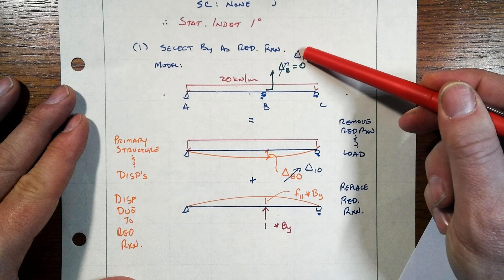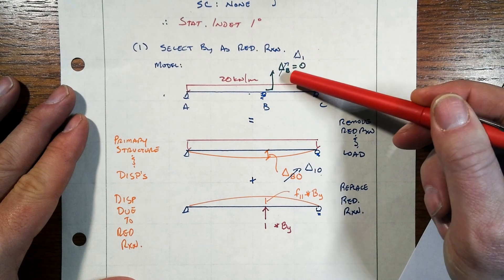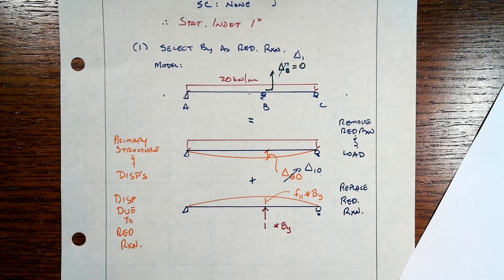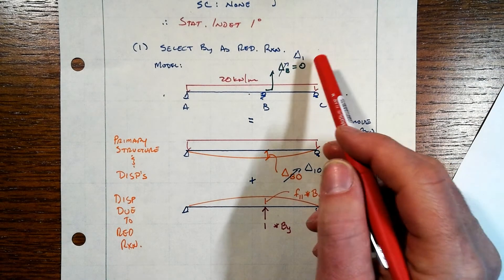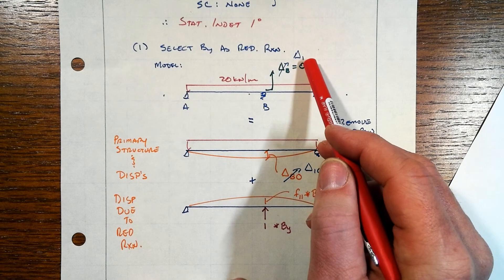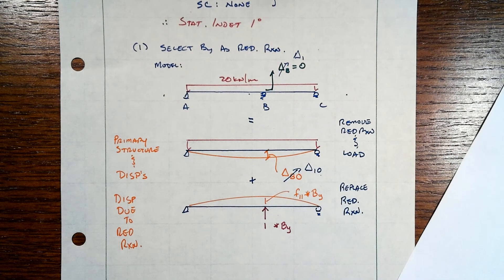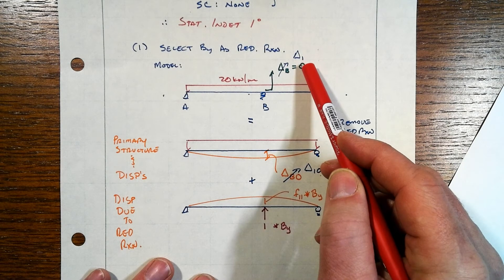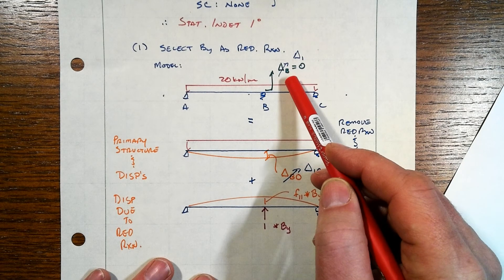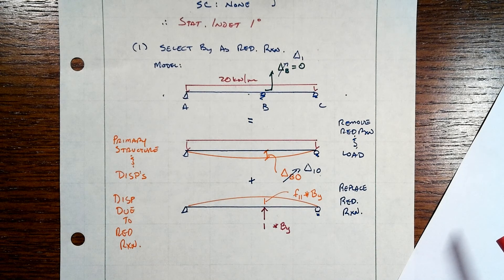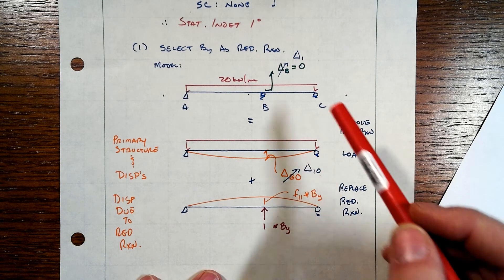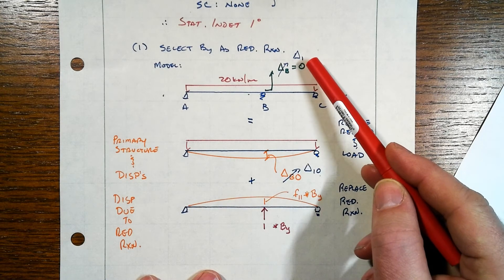Now, you'll note that I rewrote that as delta one as opposed to delta B. If you're only dealing with one degree indeterminate systems, you don't need this additional nomenclature that I'm introducing here. But if we have two, three, four redundant reactions, we're going to need that additional numerical notation. And using the numbers is easier, ultimately, to execute than the letters. You'll see this later on in more complex models. Here, though, I'm going to do it just to introduce it.